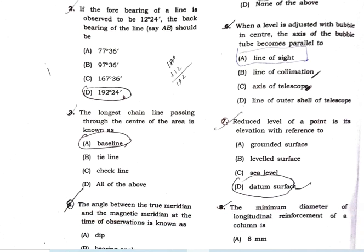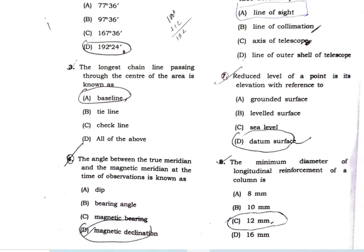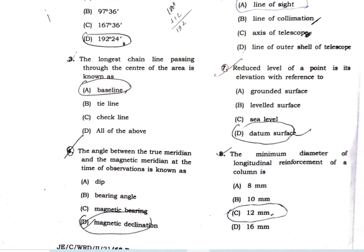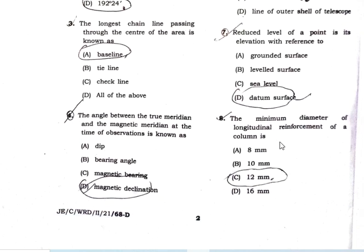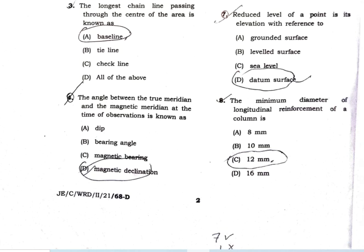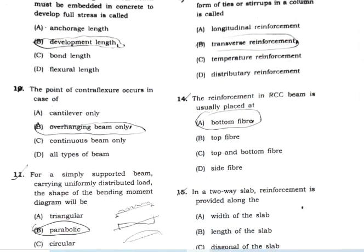The reduced level of a point is its elevation measured with respect to the datum surface. The minimum diameter of the longitudinal reinforcement of a column is 12 mm — that is the correct answer.